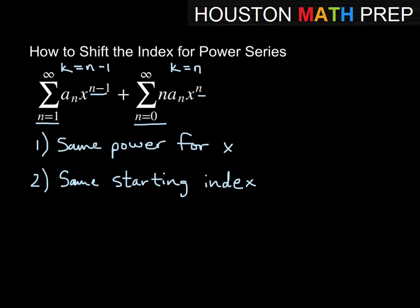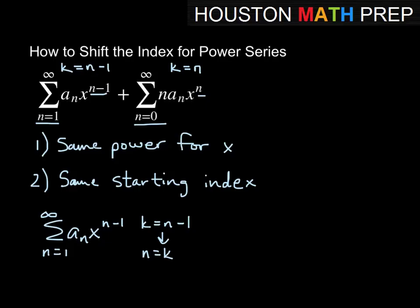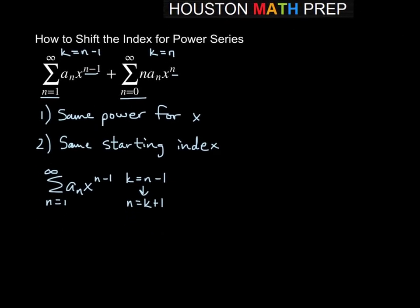Let's work on the first one. We have n equal to 1 starting, and then we have a sub n times x to the n minus 1. Our substitution here is k equal to n minus 1, or another way to look at this is that n equals k plus 1. So if we replace everything in terms of k: our starting index, since k is n minus 1 and n starts at 1, k will start at 0. Then a sub n becomes a sub k plus 1, and x to the n minus 1 becomes x to the k.